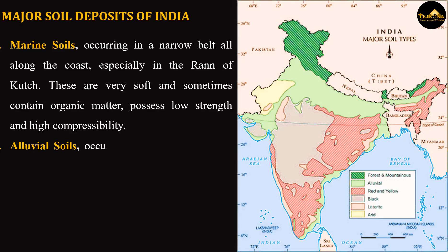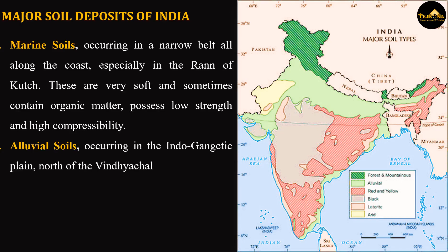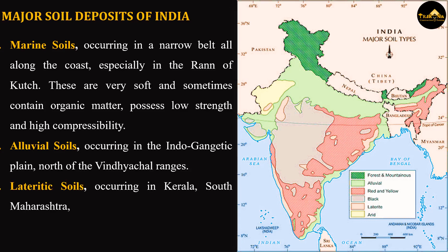Alluvial soils, occurring in the Indo-Gangetic Plain, north of the Vindhyachal Ranges. Lateritic soils, occurring in Kerala, South Maharashtra, Karnataka, Orissa, and West Bengal.